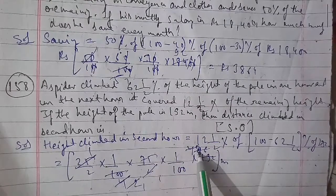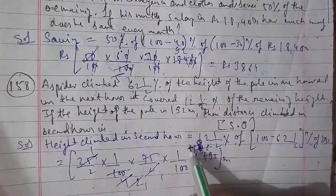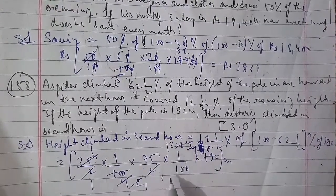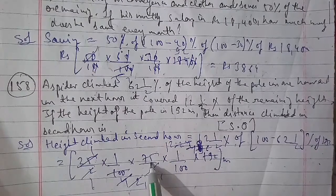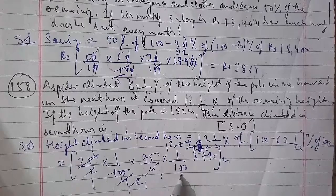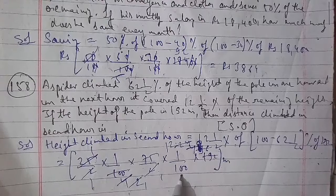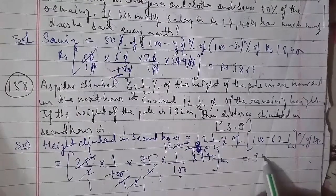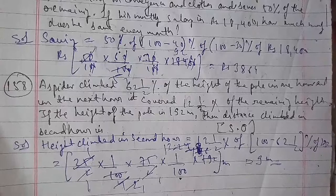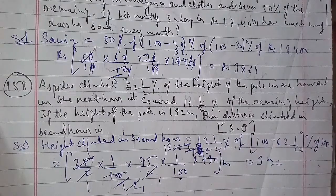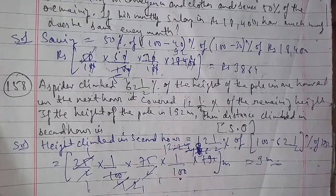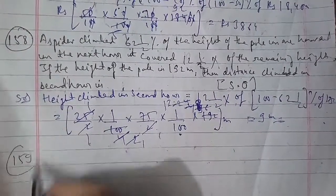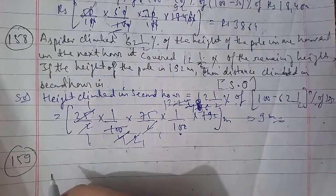Question 159: A man spends 35% of his income on food, 25% on children's education, and 80% of the remaining on housing. What percent of his income is he left with? Options: 8%, 9%, 10%, 12%, and 14%.